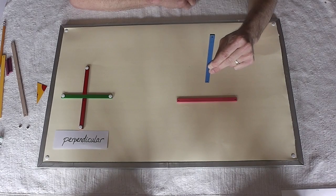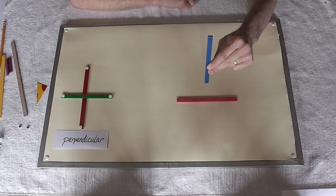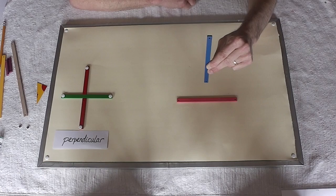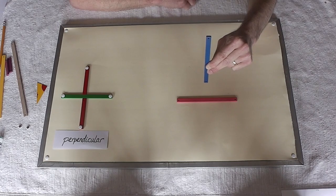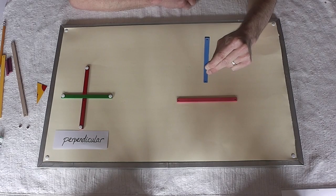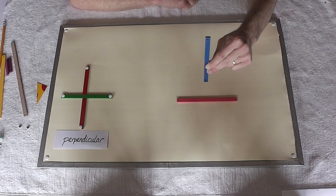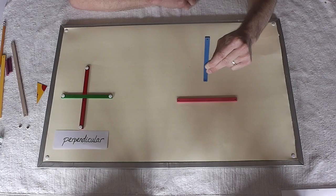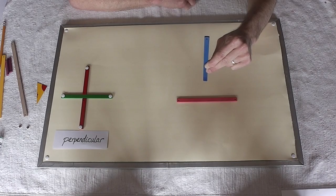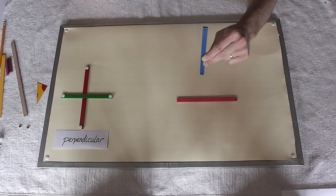Are they convergent, meaning are they coming together? Nope, because they're never going to meet. So they're not divergent either. They're neither coming together nor moving further apart. They're not perpendicular. They're not intersecting. They're on two separate planes.